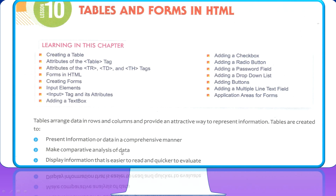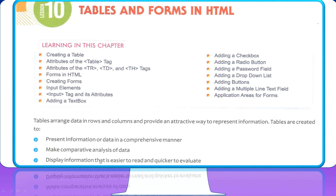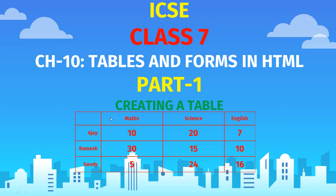Tables also make comparative analysis of data easier — we can compare records like the marks of Ajay and Ramesh very easily when information is represented in table form. Additionally, tables display information that is easier to read and quicker to evaluate. It becomes very easy to read information when it is represented in a table. This is what we are going to do in this chapter — create tables using the HTML language.